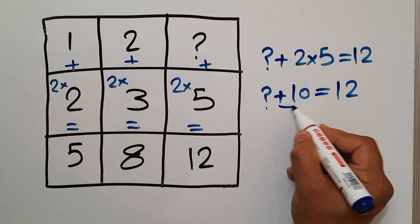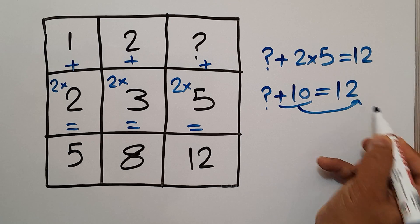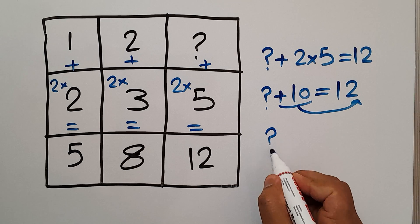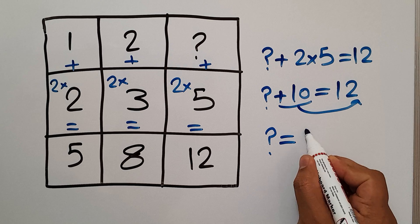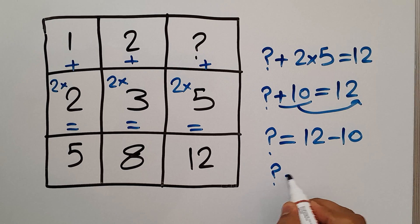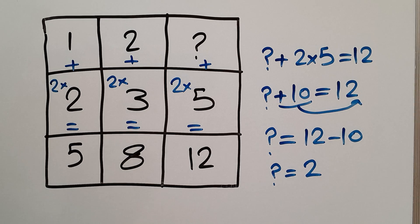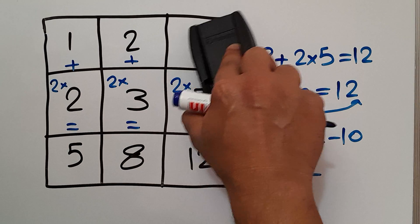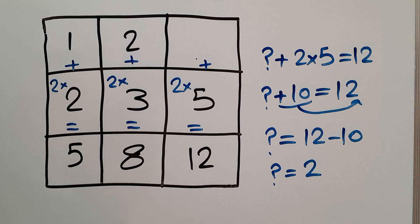Let's move this number to the right-hand side. So, question mark will be equal to 12 minus 10. And 12 minus 10 is 2. So therefore, our final answer to this problem is 2.